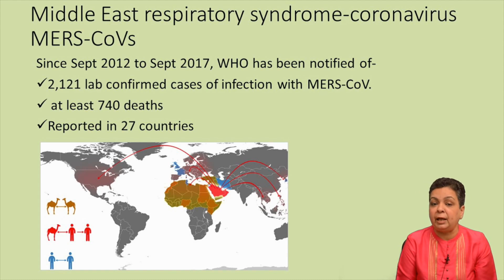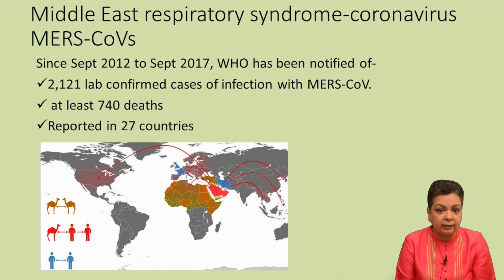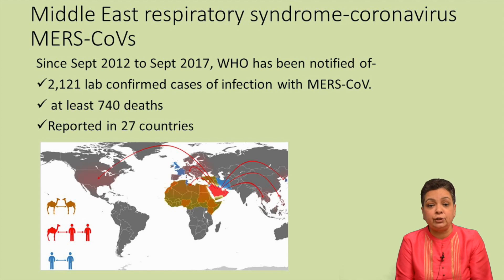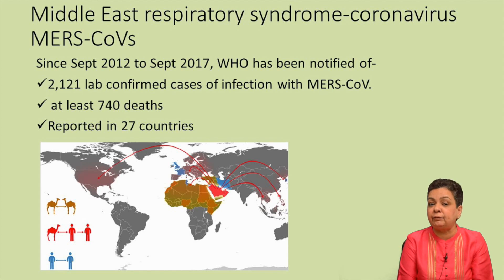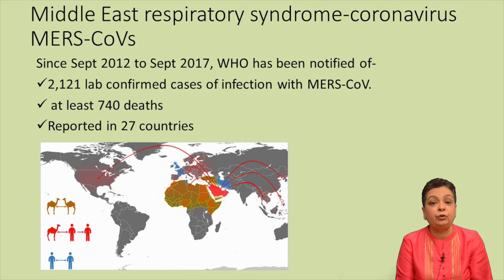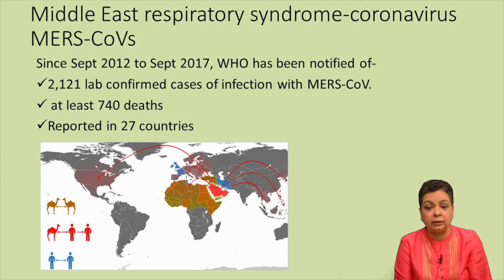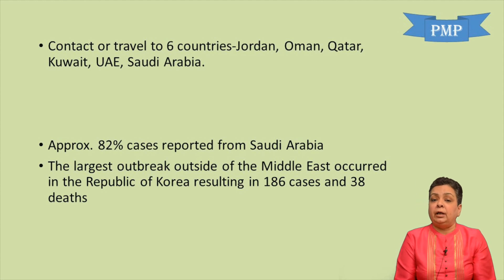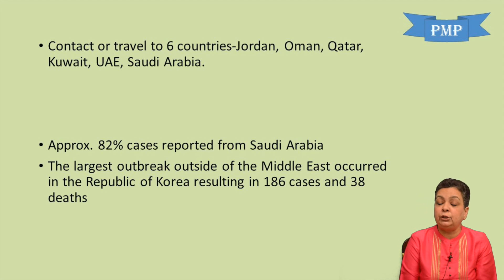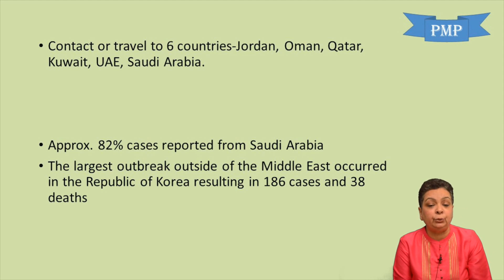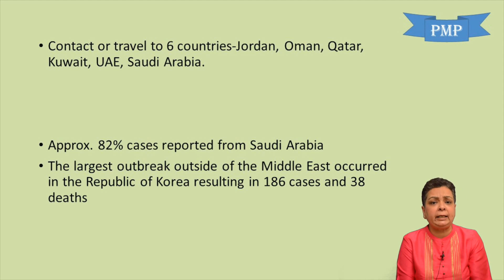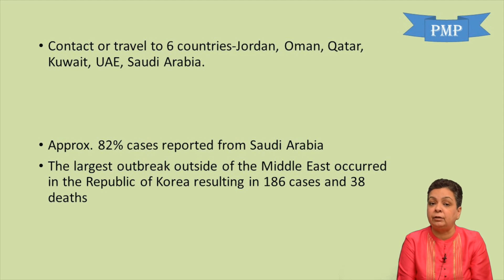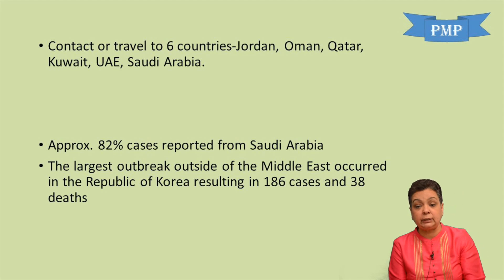Another important member is MERS — Middle East Respiratory Syndrome coronavirus. From September 2012 to September 2017, WHO reported 2,121 cases with at least 740 deaths across 27 countries, including in America, Malaysia, Indonesia, and Korea, though it has not yet been reported from India. There is always a history of contact with or travel to Jordan, Oman, Qatar, Kuwait, UAE, or Saudi Arabia, with approximately 82% of MERS cases reported from Saudi Arabia. The largest outbreak outside the Middle East occurred in the Republic of Korea, resulting in 186 cases and 38 deaths.